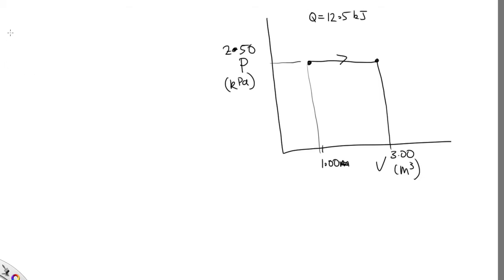Now part A asks us to calculate the change in internal energy for this case. We've got Q. We can easily calculate W, as W is just the area under the PV graph.